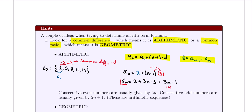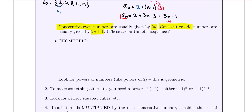Before we move on to geometric sequences, a couple of extra hints: consecutive even numbers are usually given by the formula 2n, and consecutive odd numbers by 2n plus 1 — these are arithmetic sequences. A geometric sequence is a sequence of numbers where each term after the first is obtained by multiplying the preceding term by a fixed constant called the common ratio. For example: 2, 4, 8, 16, and 32.